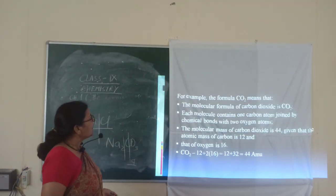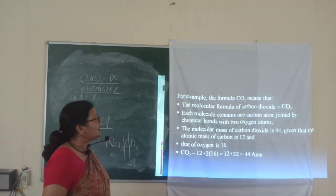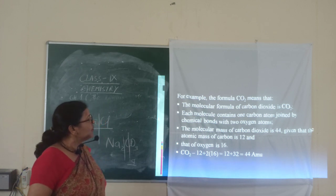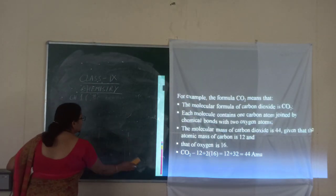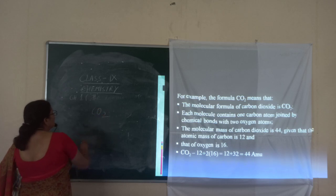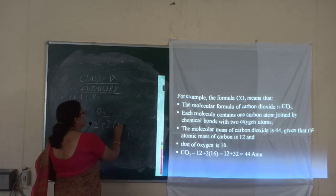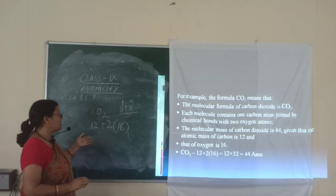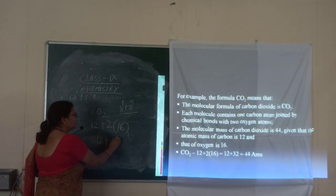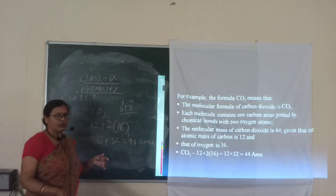Suppose you have taken carbon dioxide CO2 — each molecule consists of one atom of carbon and two atoms of oxygen. I will tell you the molecular mass — how to calculate. Carbon is having 12, and two oxygen atoms — oxygen is 16, that means 8 protons plus 8 neutrons. So that will be 12 plus 32, that will be 44 amu — that means atomic mass unit.